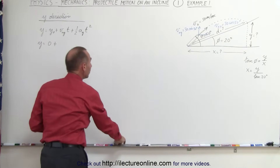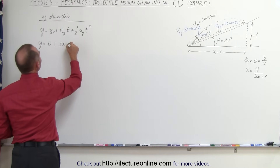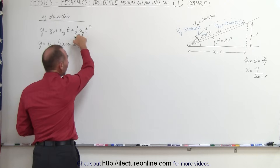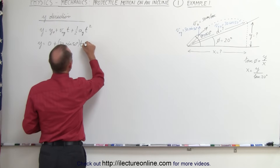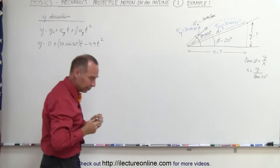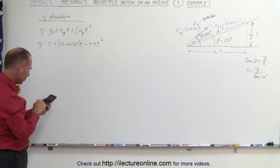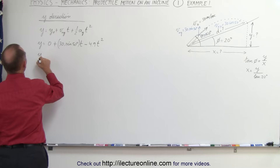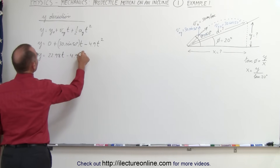V-initial-x equals 30 times the cosine of 50 degrees. So plugging in: y equals 30 times sine of 50 degrees times t, plus the acceleration in the y direction which is negative 9.8 meters per second squared, giving minus 4.9 t-squared. Simplifying with a calculator, sine of 50 times 30 equals 22.98, so y equals 22.98t minus 4.9t-squared.